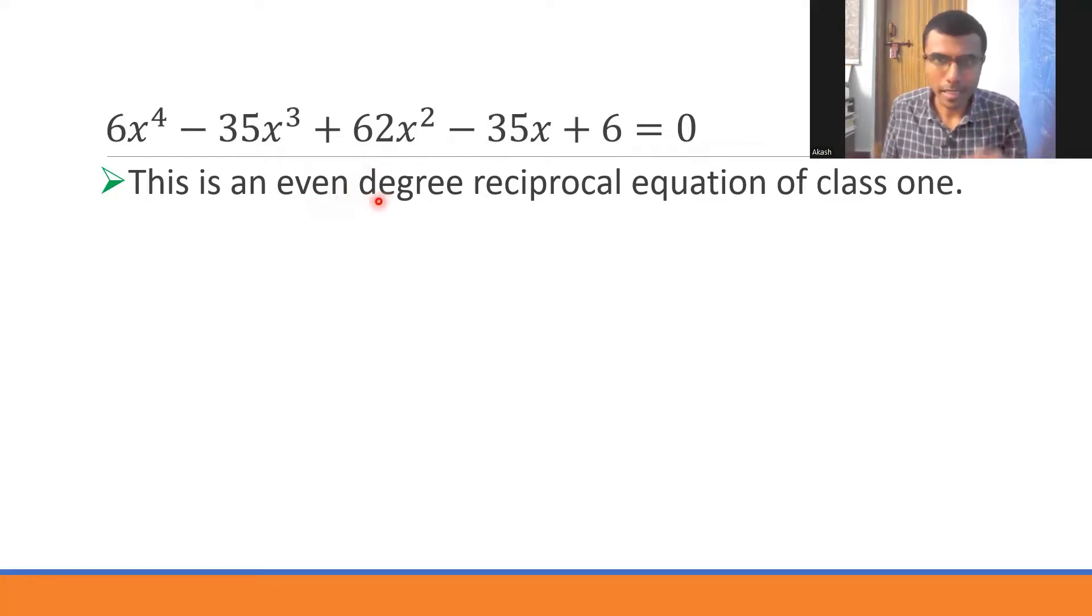Now what is this even degree? If you observe, the degree of this polynomial on the left hand side is 4. The highest power of x is 4, which is an even number. That's why this is an even degree reciprocal equation of class 1.